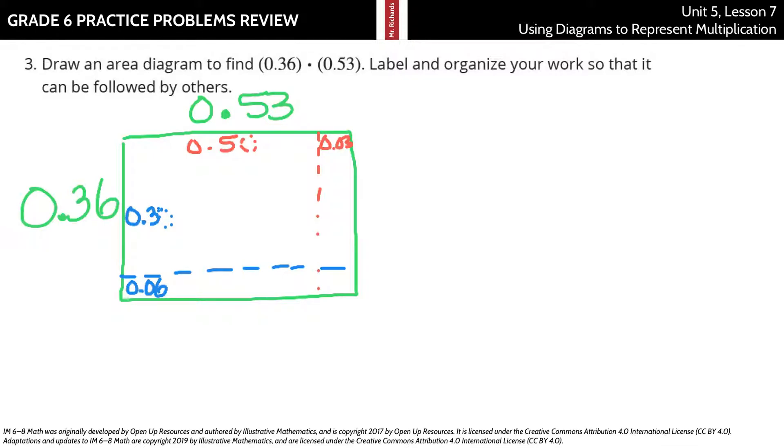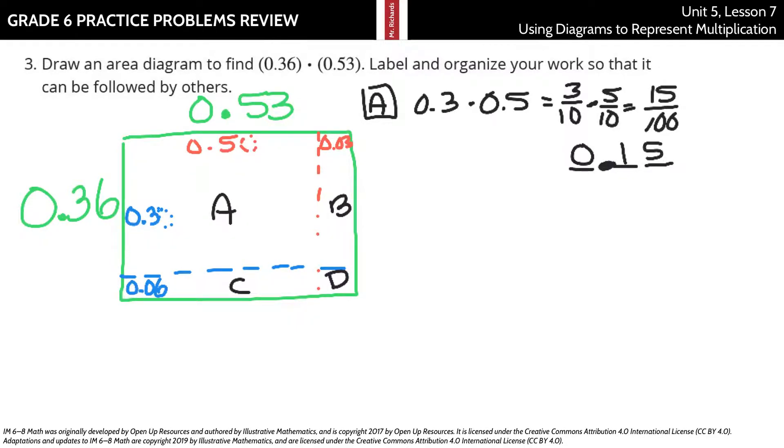Then it can be very useful to label these A, B, C, D as we find our areas. Now for A, A is going to be that 30 hundredths or 0.3 times the 0.5. And so really we're looking at 0.3 times 0.5, which is 0.15.